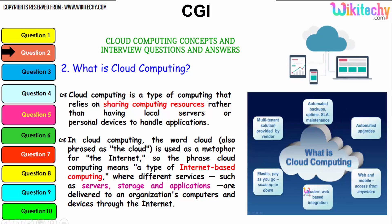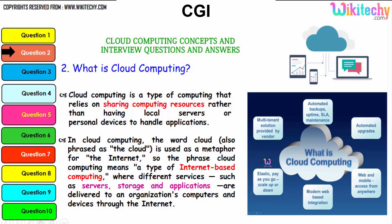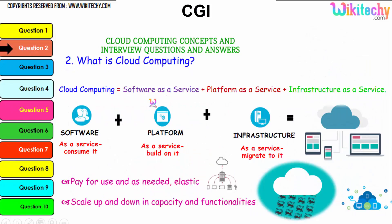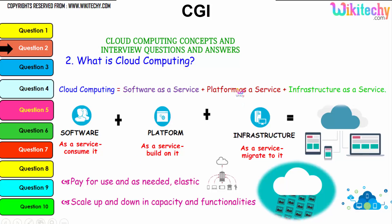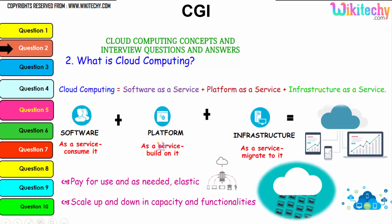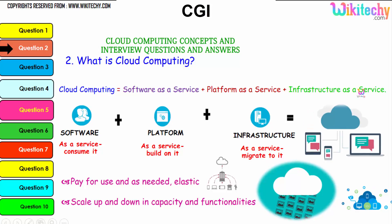Cloud computing consists of Software as a Service, where software is consumed as a service; Platform as a Service, where the platform is treated as a service; and Infrastructure as a Service, where infrastructure is treated as a service. The collaboration of software, platform, and infrastructure together is referred to as cloud computing.